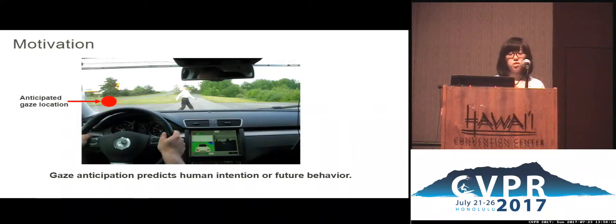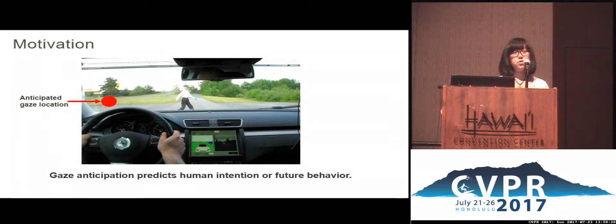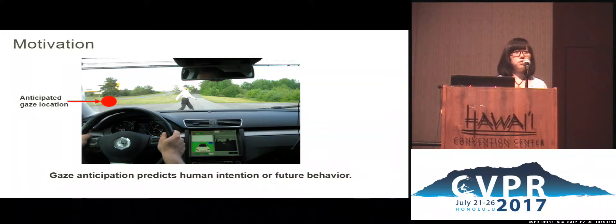Let's first look at this example. Given this video frame as well as the anticipated gaze location, what can we learn from this? The way you can think about this is that we can actually pull information from this very unique first-person window. Gaze anticipation could reveal the human intention of future behavior. From here, we notice that this driver is not going to pay attention to the pedestrian in front in the next few seconds. Thus, the system could provide proactive feedback to the driver for accident prevention.